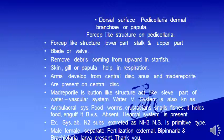Arms develop from the central disc. Anus and madreporite are present on the central disc. Madreporite is a button-like structure and acts as the entry point of the water vascular system, also known as the ambulacral system.